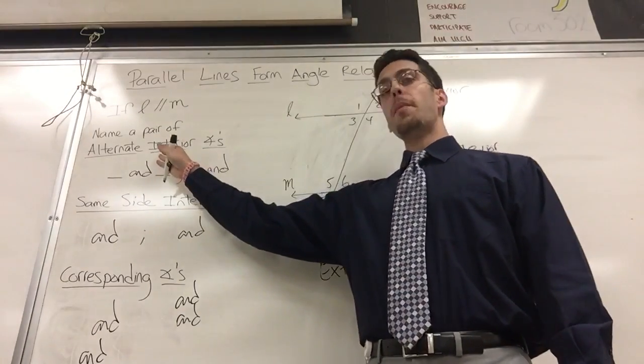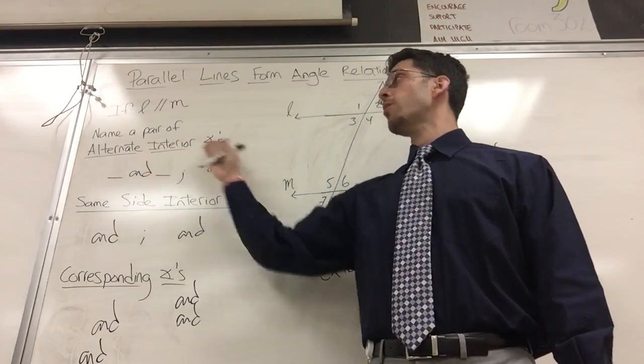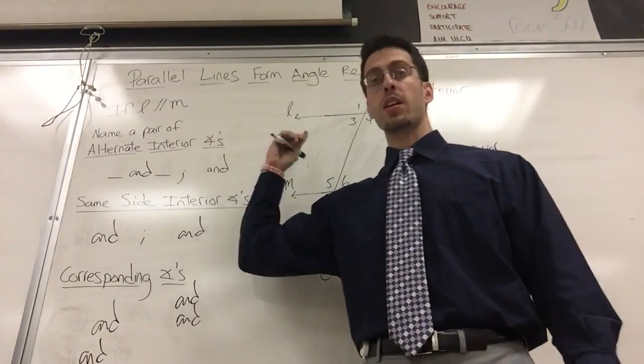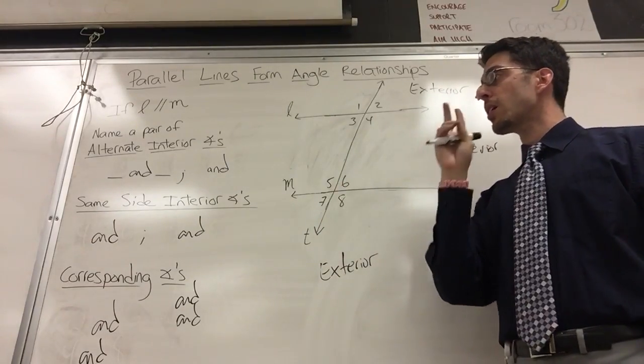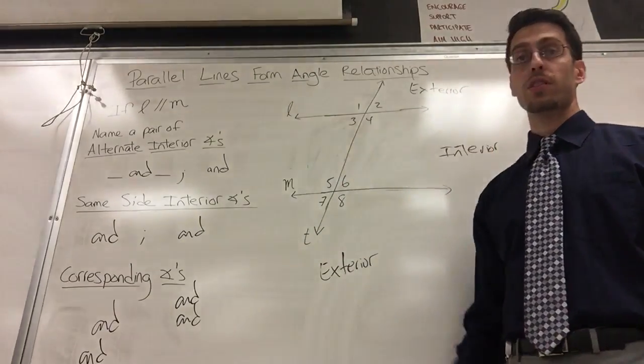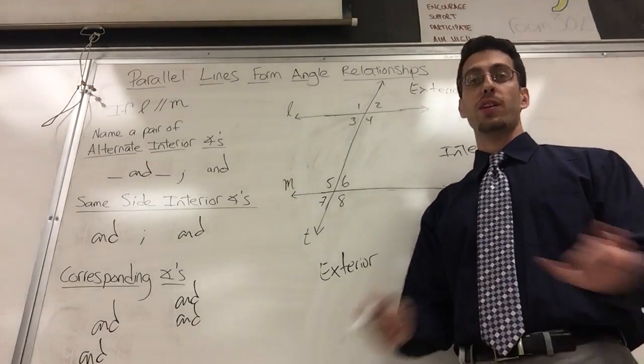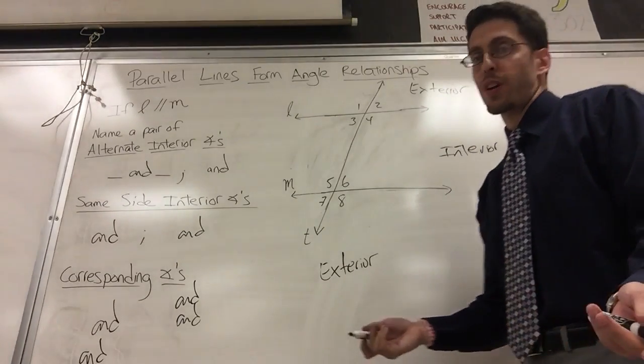Now list or name a pair of alternate interior angles. Looking here using these numbers one through eight, there's eight angles. Give me two that are alternate interior. Well, you got to know what interior means first. A lot of this stuff is straight English.